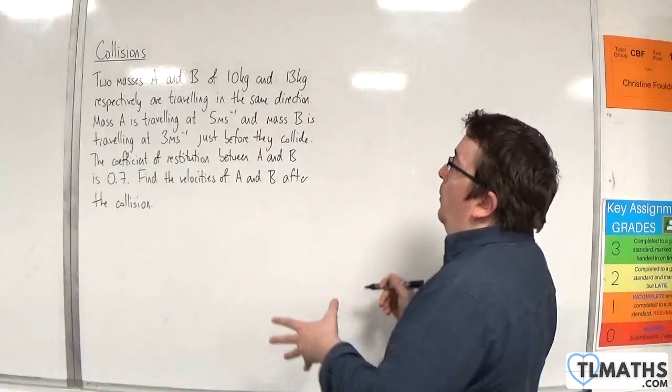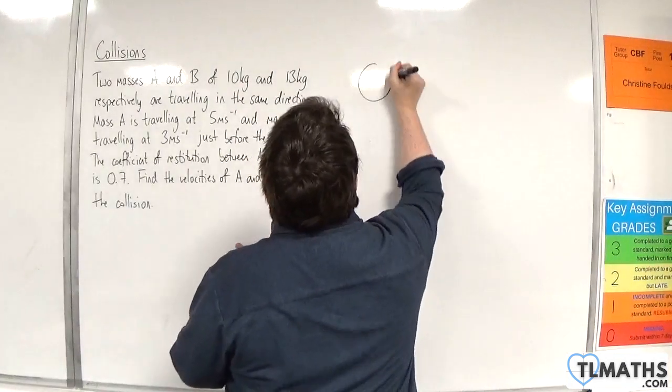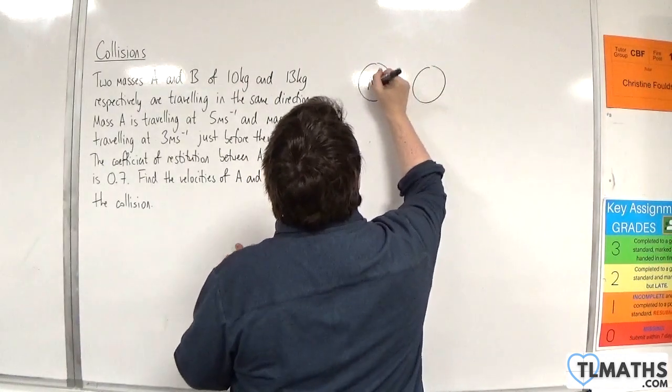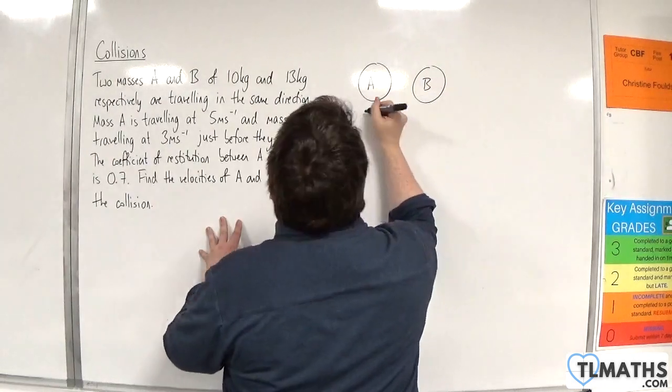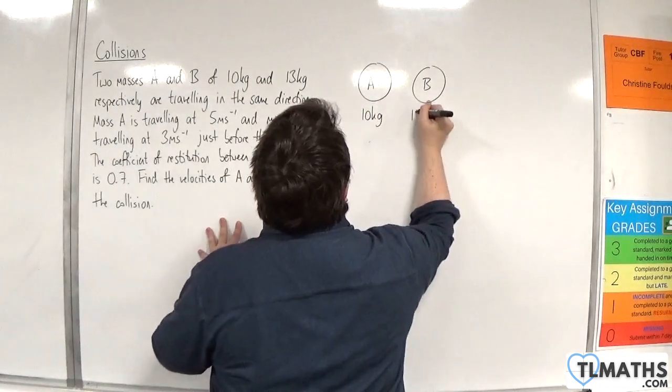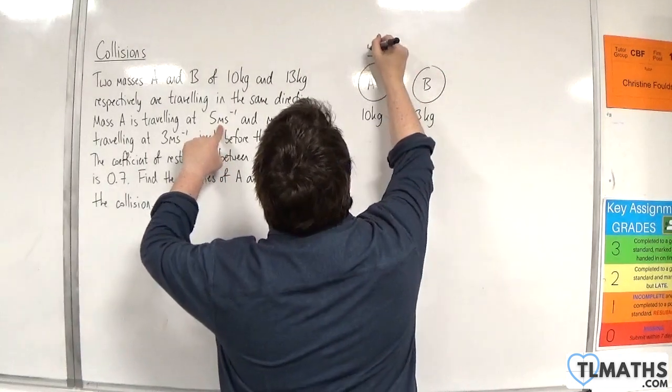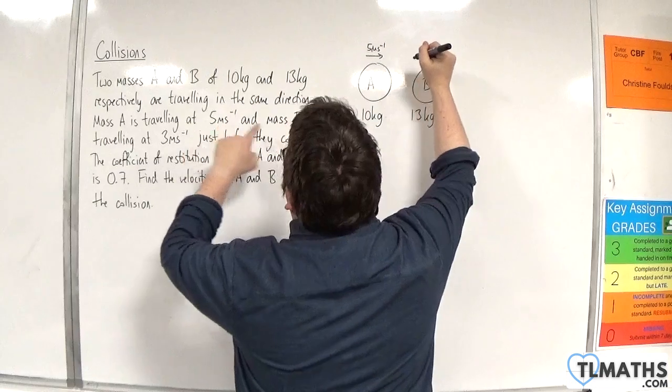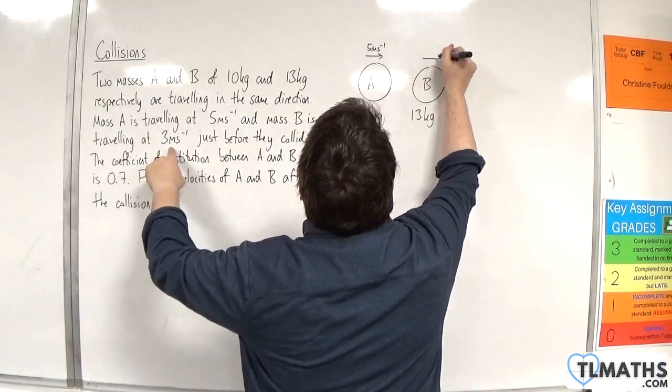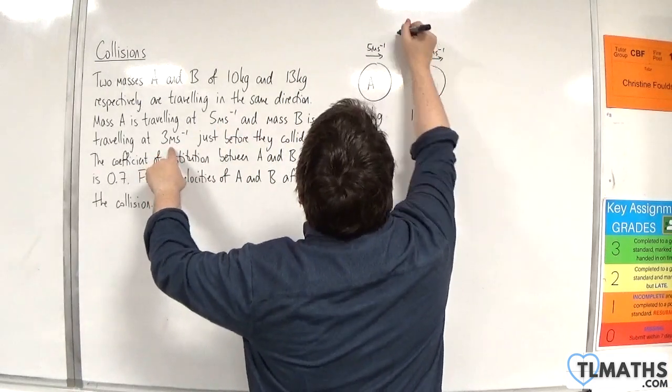So let's draw a diagram so we can visualize what's going on. We have our two particles A and B of masses 10 kilos and 13 kilos respectively. A is traveling at 5 meters per second and B is traveling at 3 meters per second. They're both traveling in the same direction, and this is before.